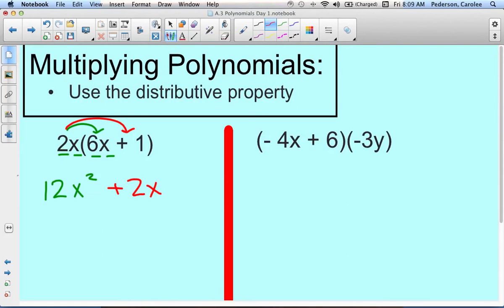With this second example, the distributive property again is applied. We're going to distribute the negative 3y to the negative 4x. So we multiply the coefficients. Negative 4 times negative 3 is a positive 12, and then x times y is xy.